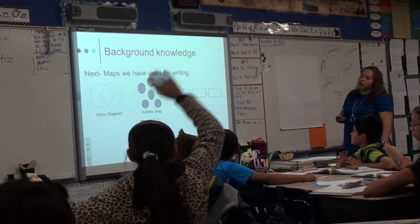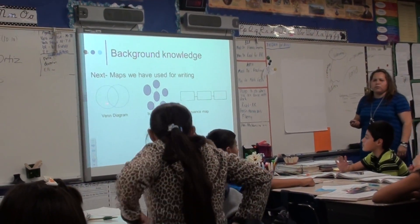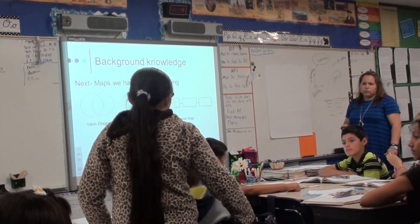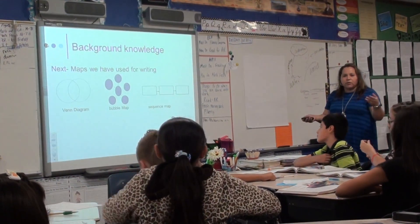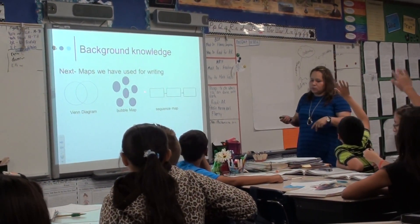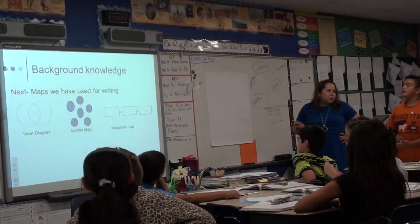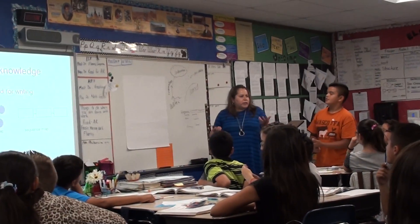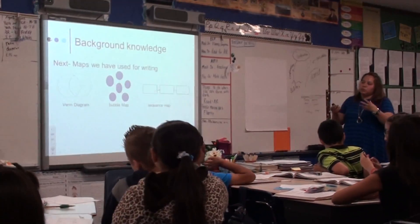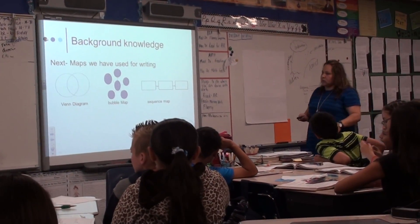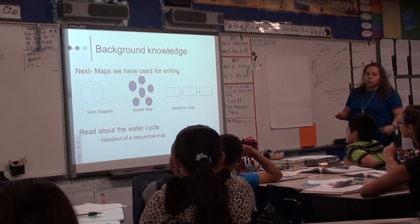We have used these sequence maps before. Esmeralda, tell me how we've used the Venn Diagram for writing. We used the Venn Diagram to compare and contrast — how things were alike and how they were different. We also recently used the bubble map. Renee, what did we use the bubble map for? We used it to write descriptive words and descriptions of how a berry travels through the digestive system. So today we're going to use a sequence map to outline the water cycle so we can write a summary.